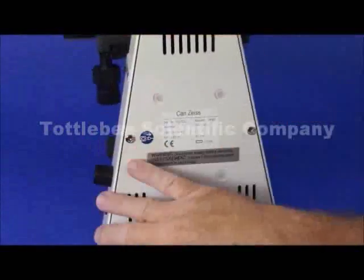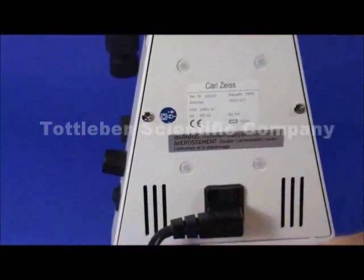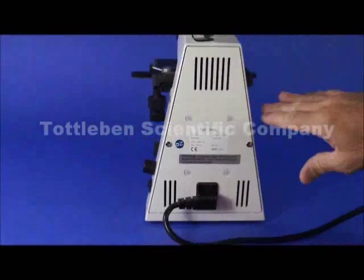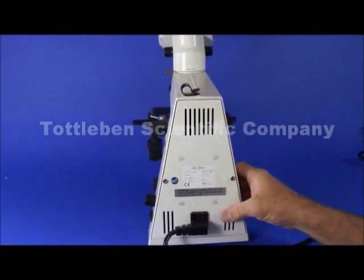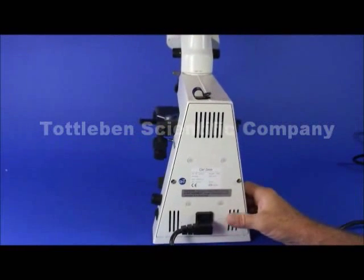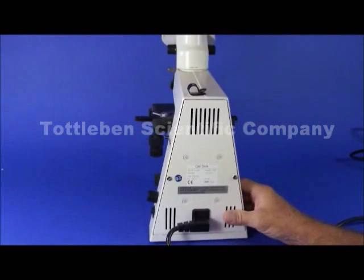Zeiss was the first company that came out with the triangular shaped pyramid design and now all the companies are doing it but they were the first. They innovated it and it's a very nice design, very nice scope. This is a well-built scope built to last probably 15-20 years easily.